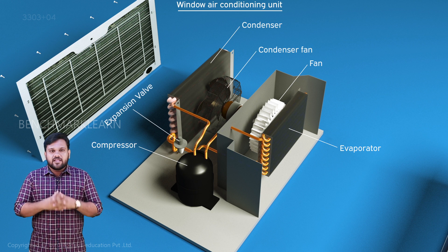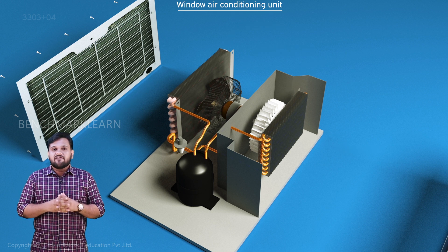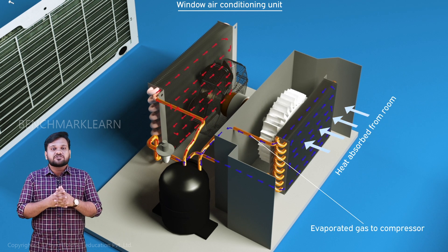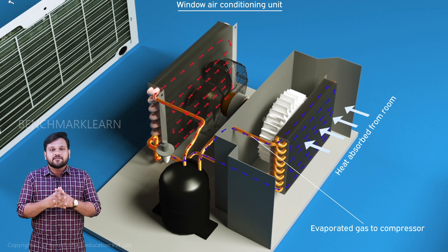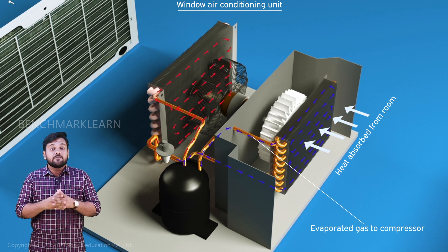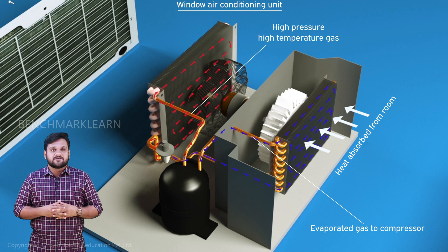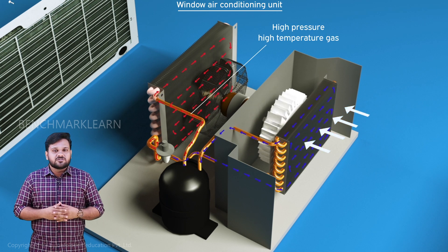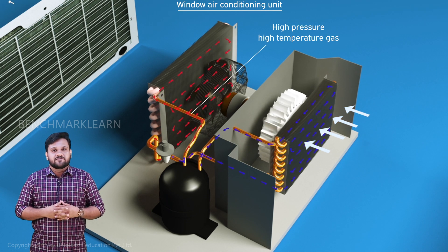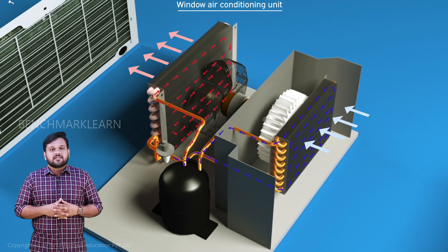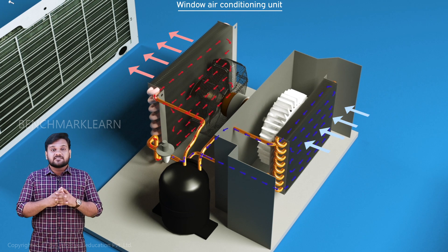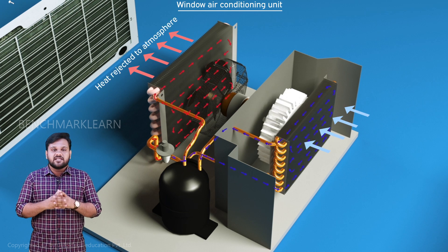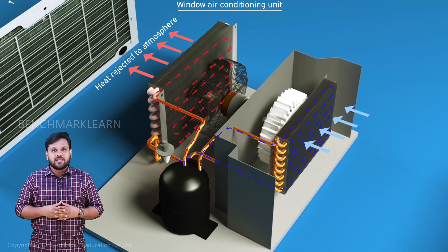The hot gas from the evaporator flows to the compressor where it is pressurized to high temperature, high pressure gas. This gas then flows to the condenser, where it rejects heat to the environment and changes phase to liquid.